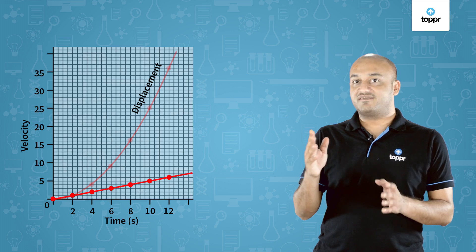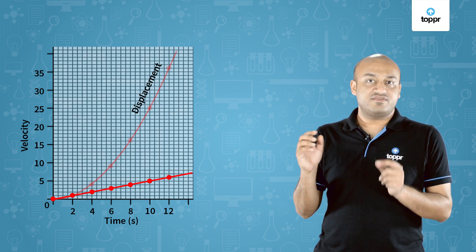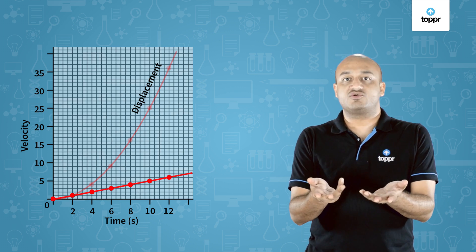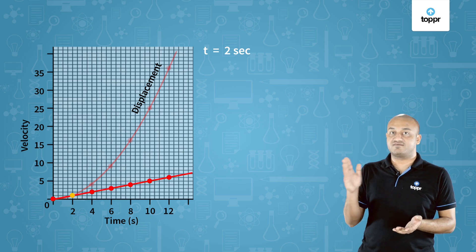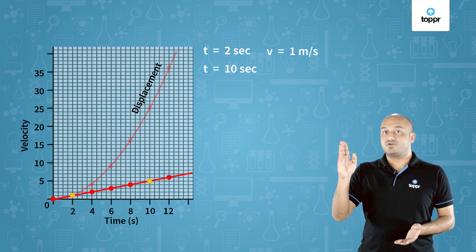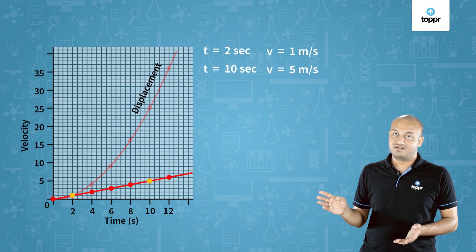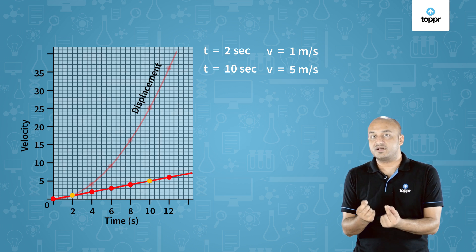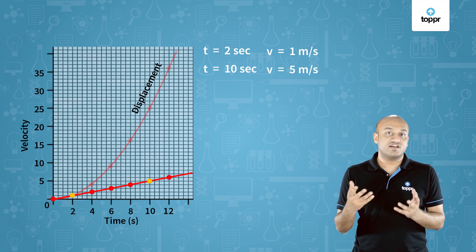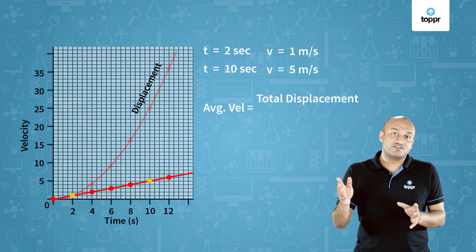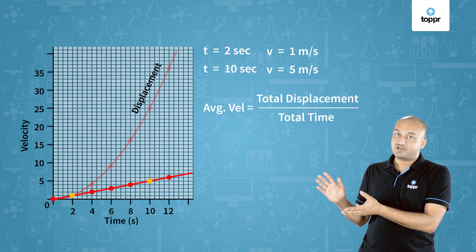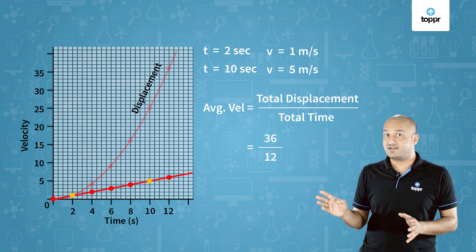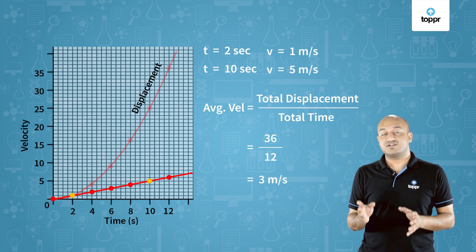In this example, the value of velocity keeps changing. The velocity at a particular instant is called the instantaneous velocity. For example, at t = 2 seconds the velocity is 1 meter per second, and at t = 10 seconds the velocity is 5 meters per second. Average velocity is something completely different — it is total displacement divided by total time. For this example, the total displacement is 36 meters and the total time is 12 seconds, so the average velocity comes out to be 3 meters per second.